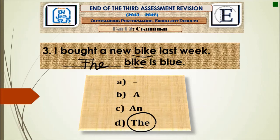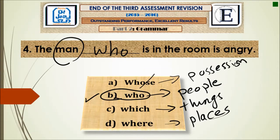Question number four: 'The man ___ is in the room is angry.' As we know, whose is used for possessive, who refers to people, which refers to things, and where refers to places. Man is a person, so the answer is who: 'The man who is in the room is angry.'